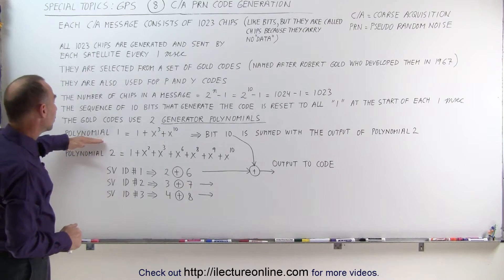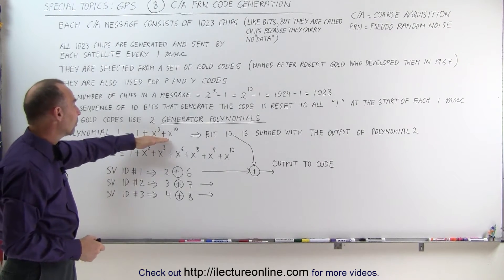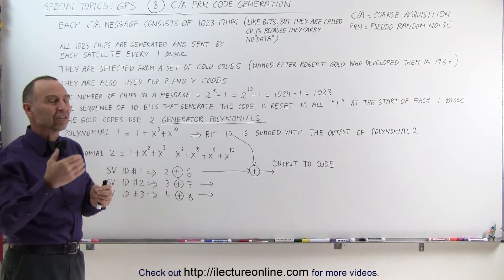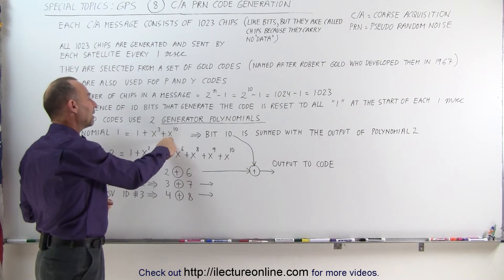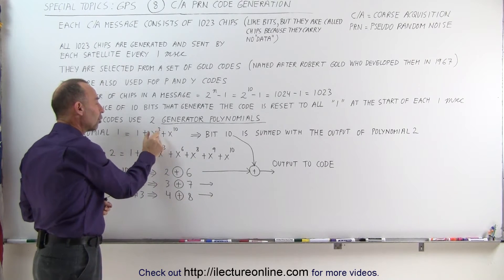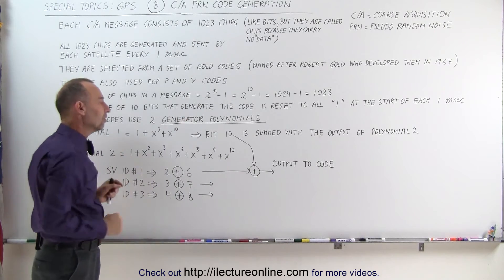Now, the first polynomial, polynomial 1, has the formula 1 plus x to the 3rd plus x to the 10th. Now, don't be afraid that x to the 3rd and x to the 10th, those are not really exponents. It's not like we put a value in here and raise to the 3rd power. This really means this is the 3rd bit in the string of 10 bits. This is the 10th bit in the string of 10 bits.